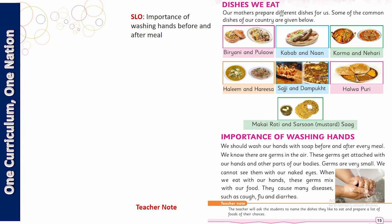Now we are coming toward some dishes. Which one is your favorite dish? Sagi? Dham pukht? Halwa puri? And here is makai ki roti and sarson ka saag.